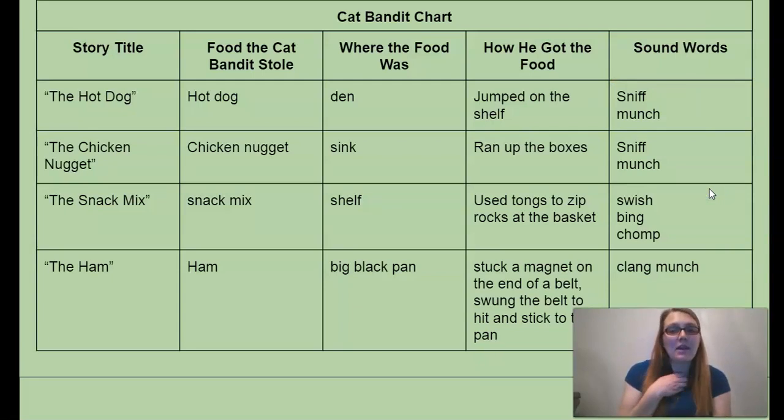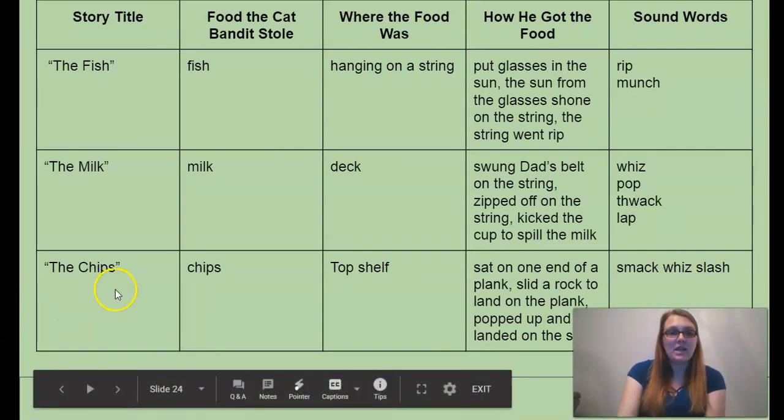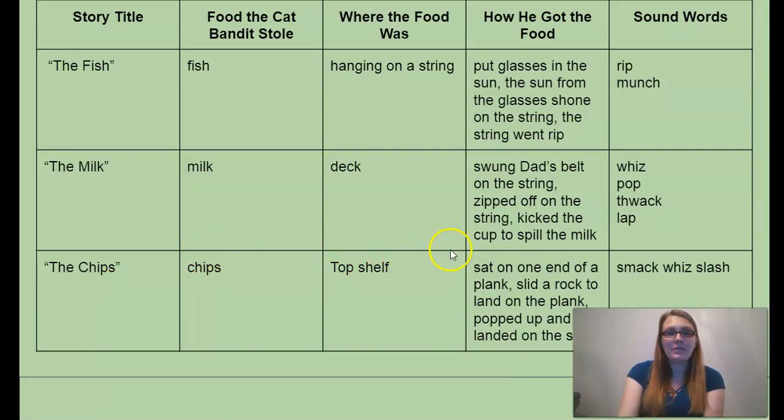All right. Here's our Cat Bandit chart of all the stories. The hot dog, the nugget, the snack mix, the ham, the fish, the milk, and today's the chips. So what he stole are some chips from the top shelf. He sat on one end of the plank, slid a rock to land on the plank, popped up, and landed on the shelf. Our sound words: smack, whiz, and slash.